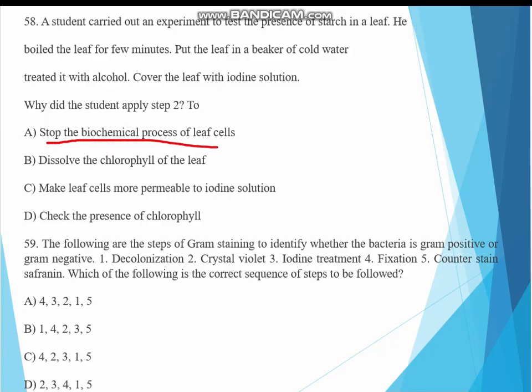Question 59. The following are the steps of gram staining to identify whether the bacteria is gram positive or gram negative. 1. Decolorization, 2. Crystal violet, 3. Iodine treatment, 4. Fixation, 5. Counter stain safranin. Which one of the following is the correct sequence of steps to be followed? The answer must be C: 4, 2, 3, 1, 5. The first is fixation, then crystal violet.